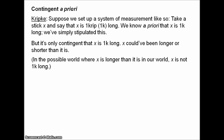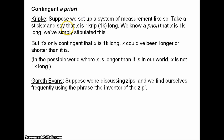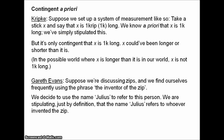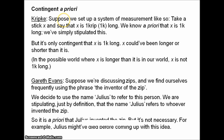A similar example comes from Gareth Evans. Suppose we're having a discussion about zips and we find ourselves frequently using the phrase 'the inventor of the zip.' This phrase is quite clunky, so we decide to use the name Julius to refer to this same person. We are stipulating, just by definition, that the name Julius refers to whoever invented the zip. So it's a priori that Julius invented the zip — but it's not necessary. He might have died before coming up with the idea, or taken a career as a florist rather than an inventor. Perhaps another contingent a priori truth: Julius invented the zip.